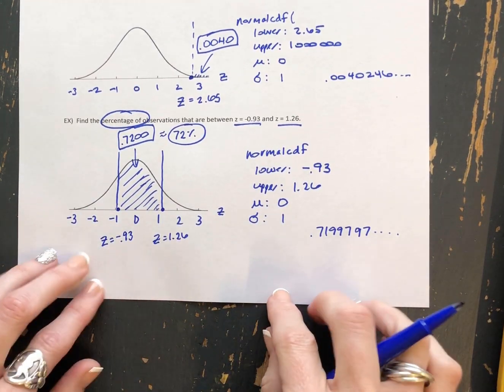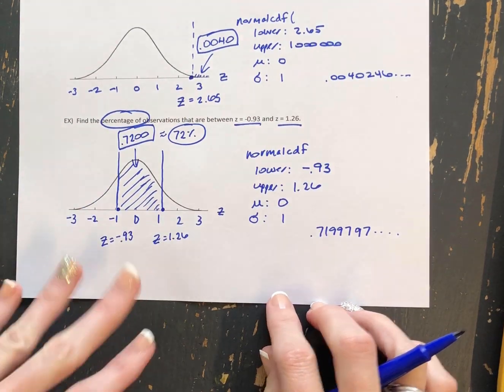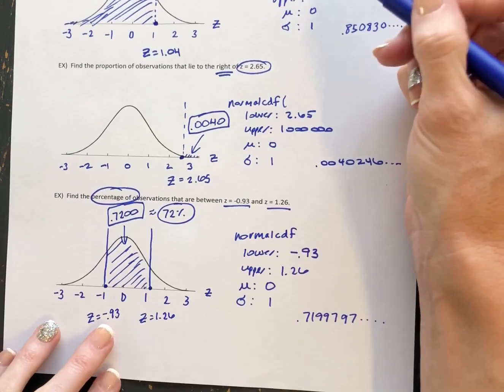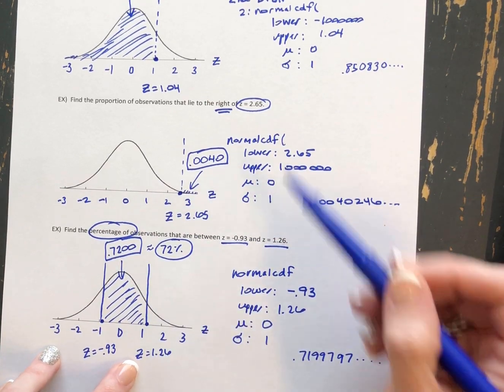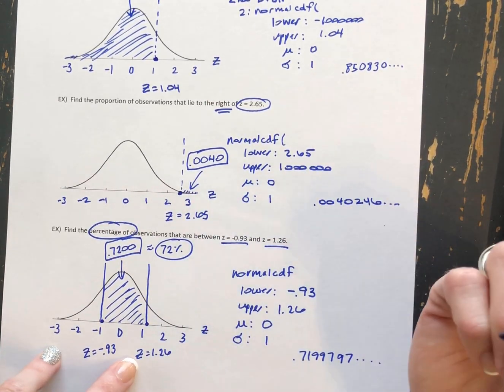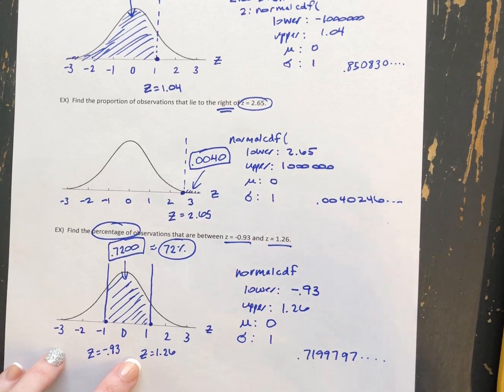So again, in summary here, anytime you are given a z-score and you want to try and find the corresponding area, that's going to be the normal CDF option.